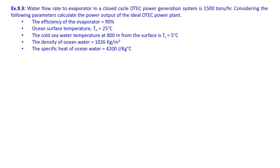Now let us move to one more exercise. Water flow rate to the evaporator in a closed cycle power generation system is given as 1500 tons per hour. Considering the following parameters, we need to calculate the power output of the ideal OTEC plant. The efficiency of the evaporator is given, surface temperature is given, cold sea water temperature at a depth of 800 meters is given, density of the ocean is given, and specific heat is also given.